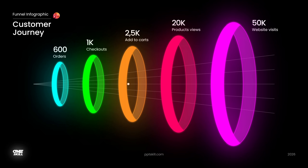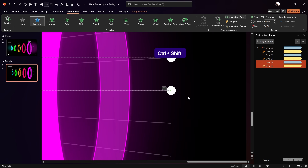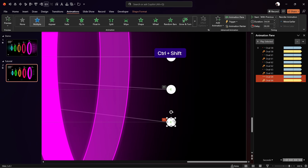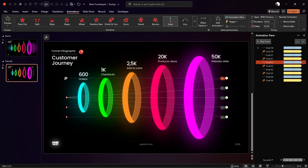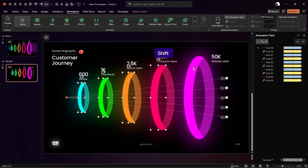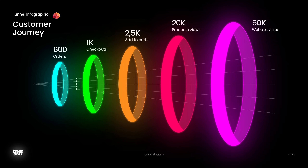Now that little circle travels to the left while shrinking, creating a beautiful depth effect. Duplicate this circle four more times and adjust the motion path lines so all circles travel to the same endpoint. Select all outer parts of the rings and bring them to front so the animation looks correct — all of those little circles should be flying through all of the beautiful rings.